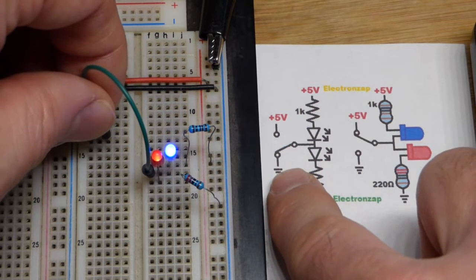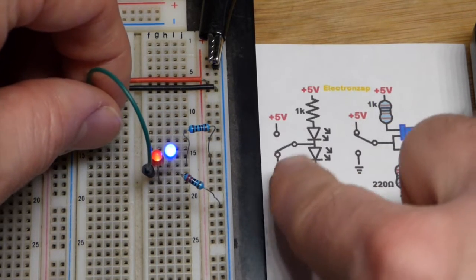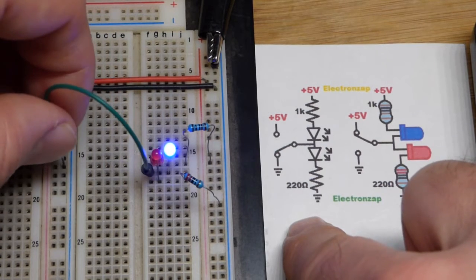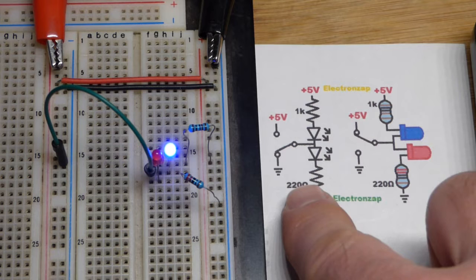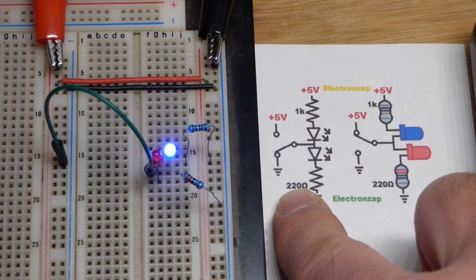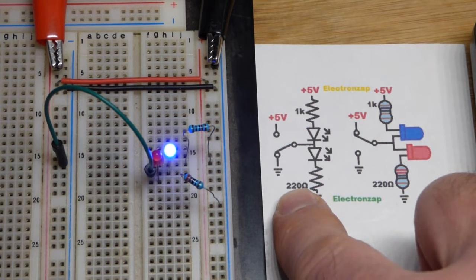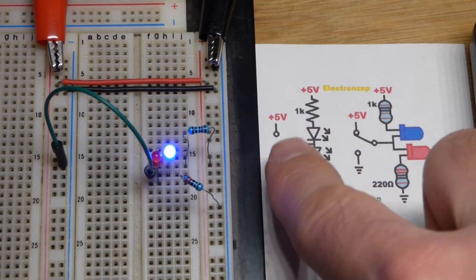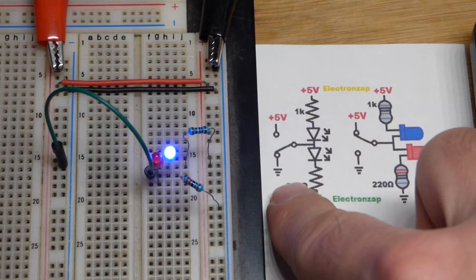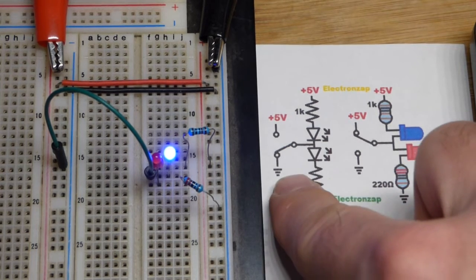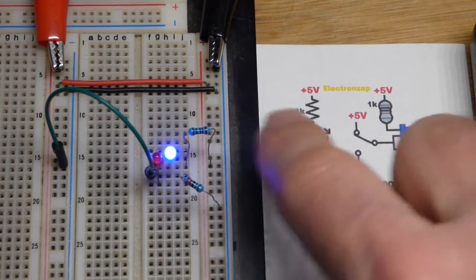Current is considered as positive going to negative. It's just the way that they knew there was a flow of electricity, but they didn't know what it was a long time ago. They didn't know about electrons, so they just kind of assumed there was a positive to negative flow. So right now we're doing what's called sinking current to ground.